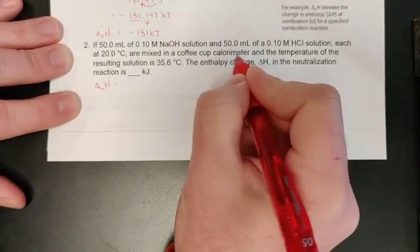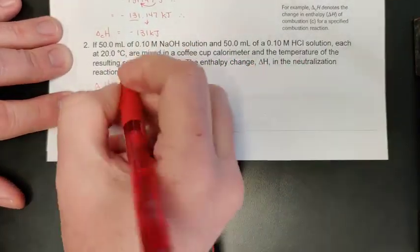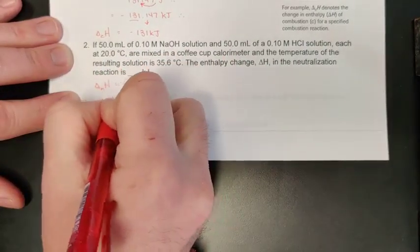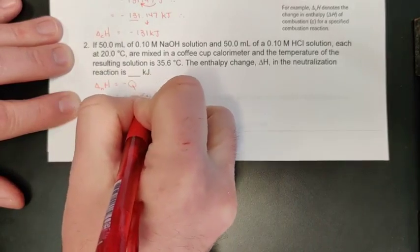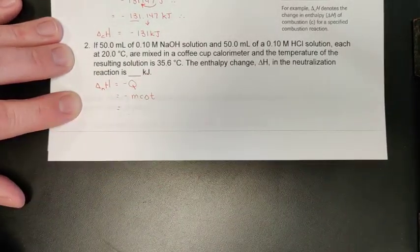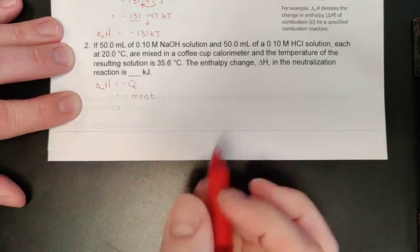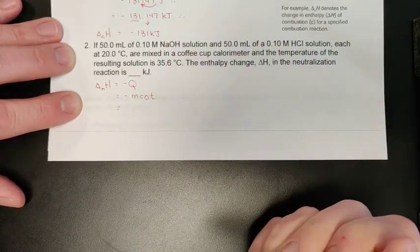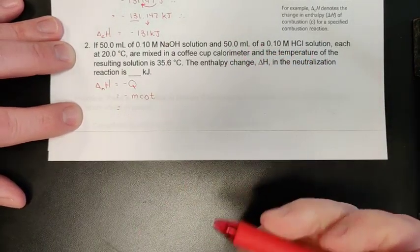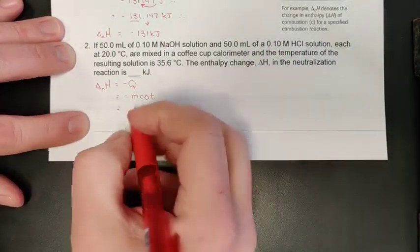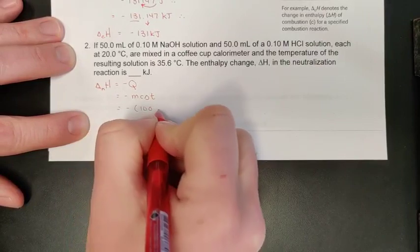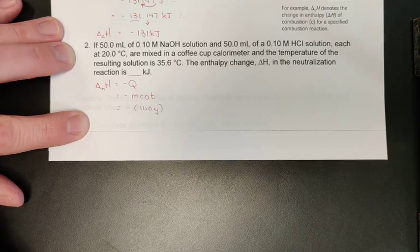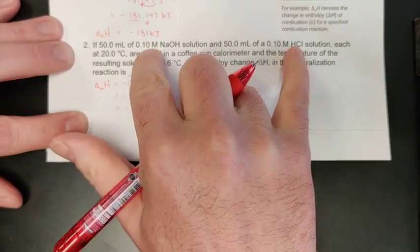Based upon the measurements we can make in our calorimeter of heating up or cooling down, we can make that equal to negative q. We already know we can extend this to mc delta t. We just have to know what we have heating up or cooling down in our calorimeter. I have 50 mL of base solution, I have 50 mL of acid solution, so I actually have a total of 100 mL of solution in my calorimeter when I run this reaction, and so that works out to 100 grams of solution or surroundings.